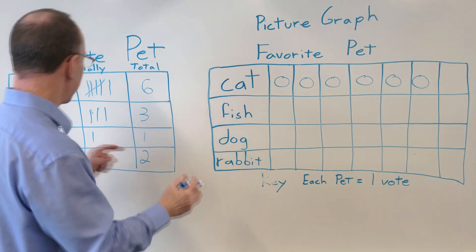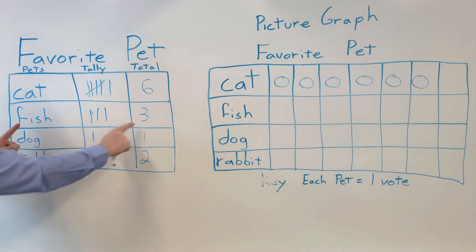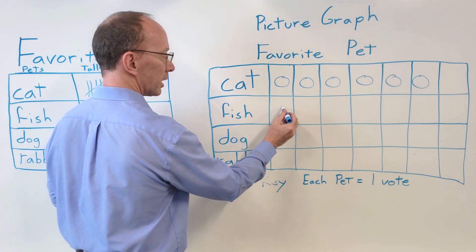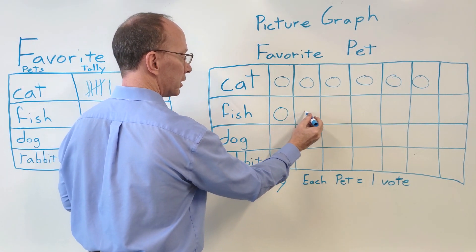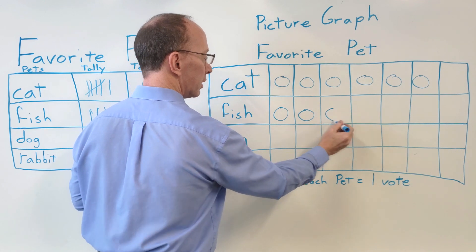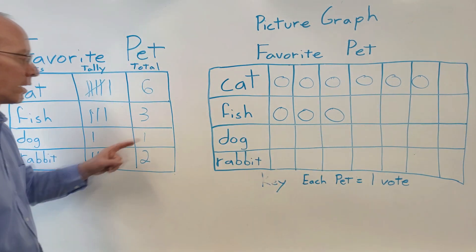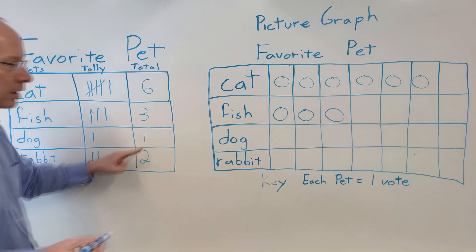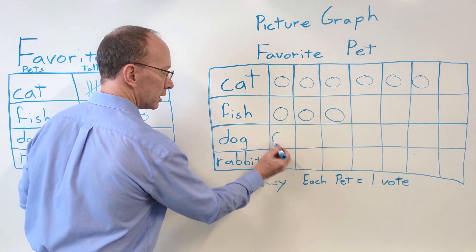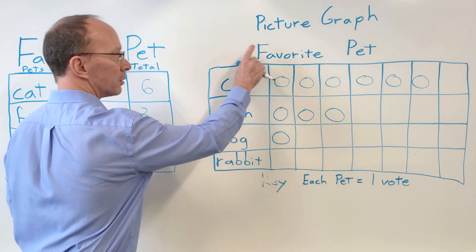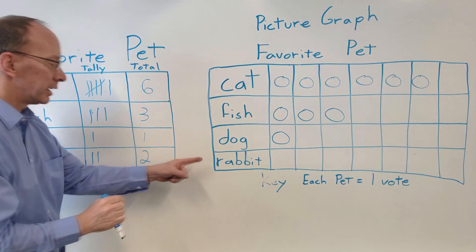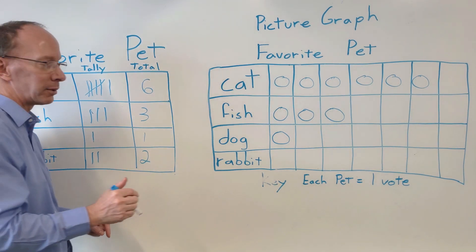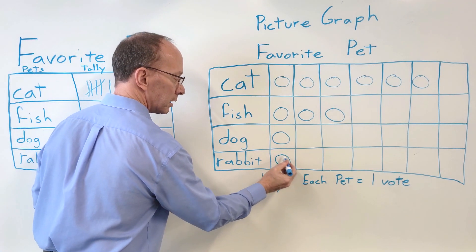Let's take a look at the fish. Here's our fish right here. We have three. Three students would like to have a fish. One, two, three. What about dogs? Let's take a look at that. We have one vote for a dog. So I put in a circle here. Remember, picture graph. Now we have rabbit. We have two votes for a rabbit. We have one, two.